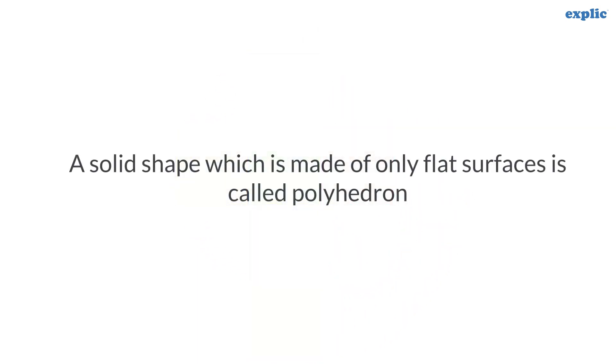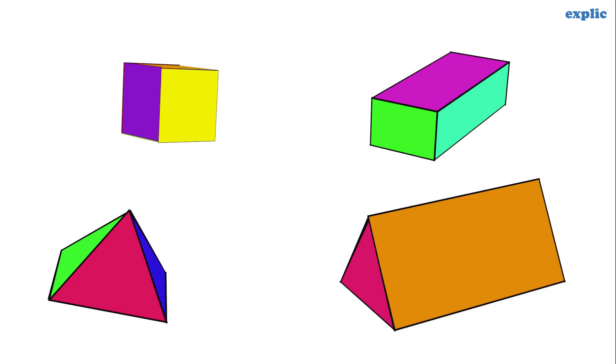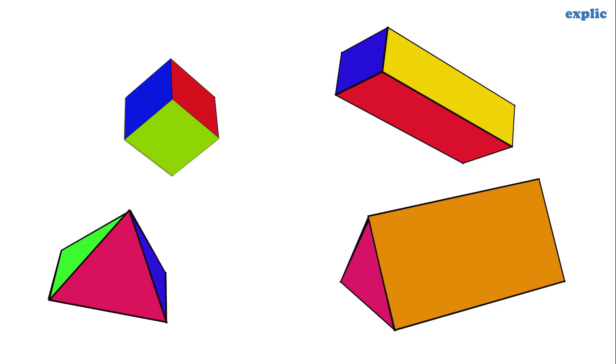A solid shape which is made of only flat surfaces is called polyhedron. For example, a cube, a cuboid, pyramid and prism.